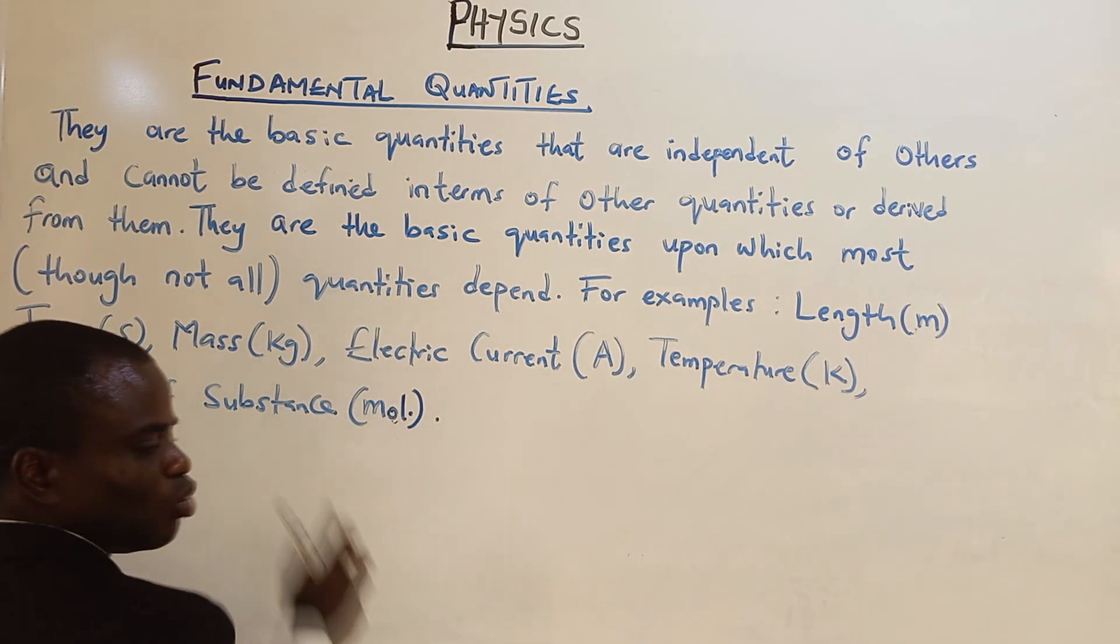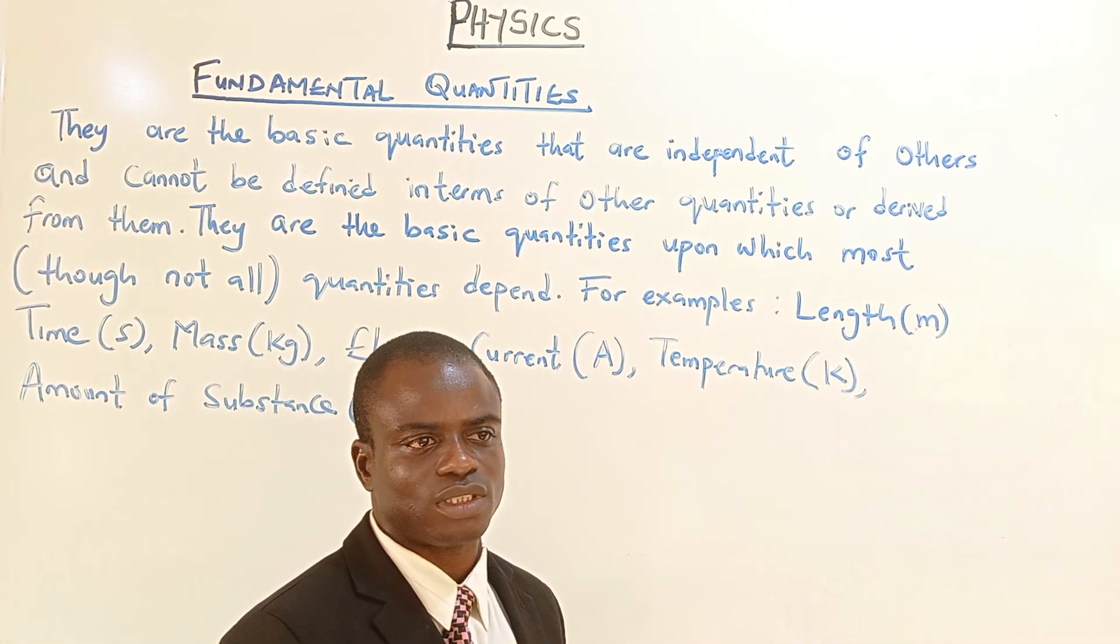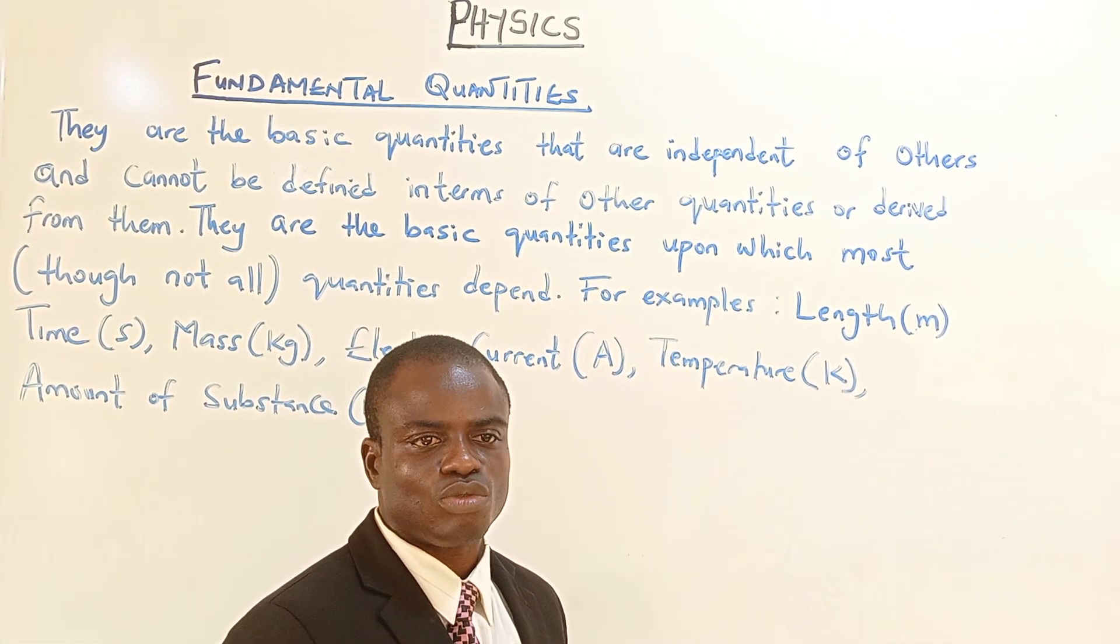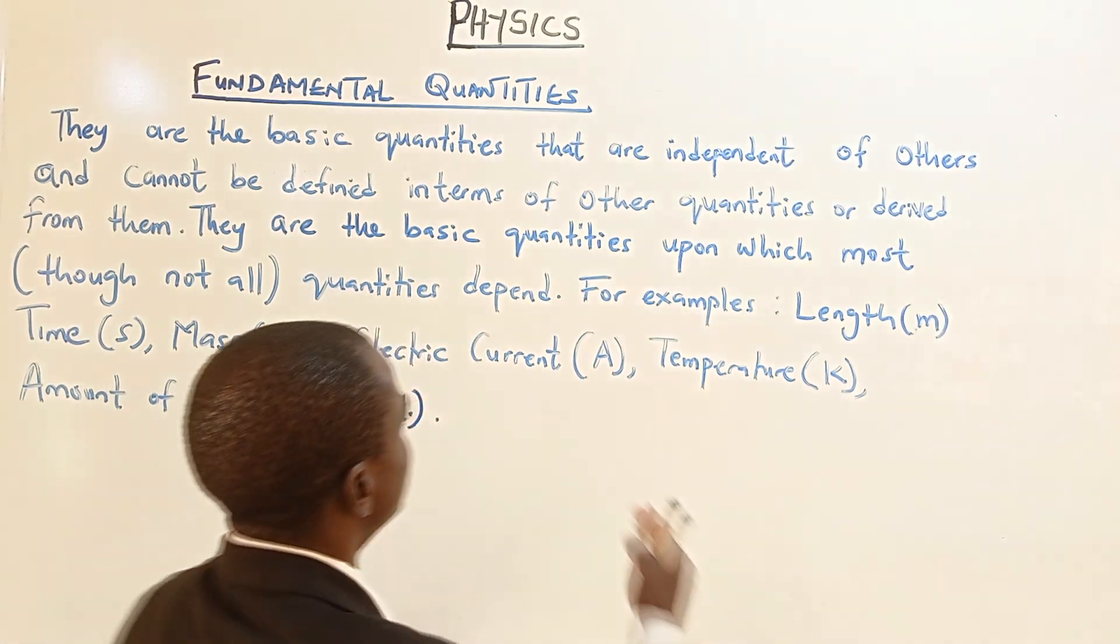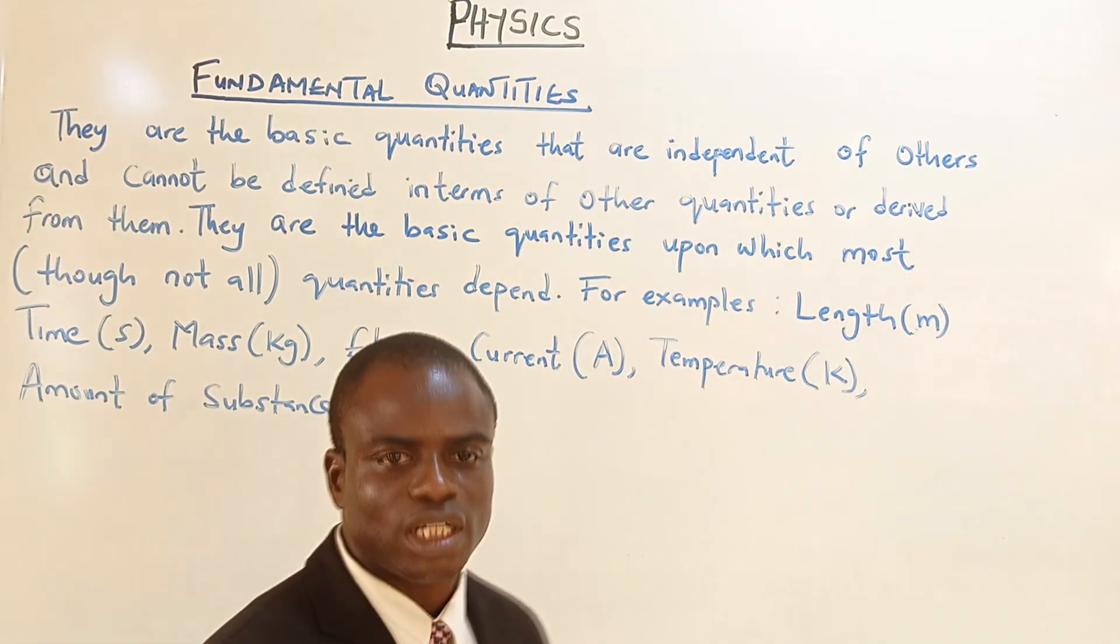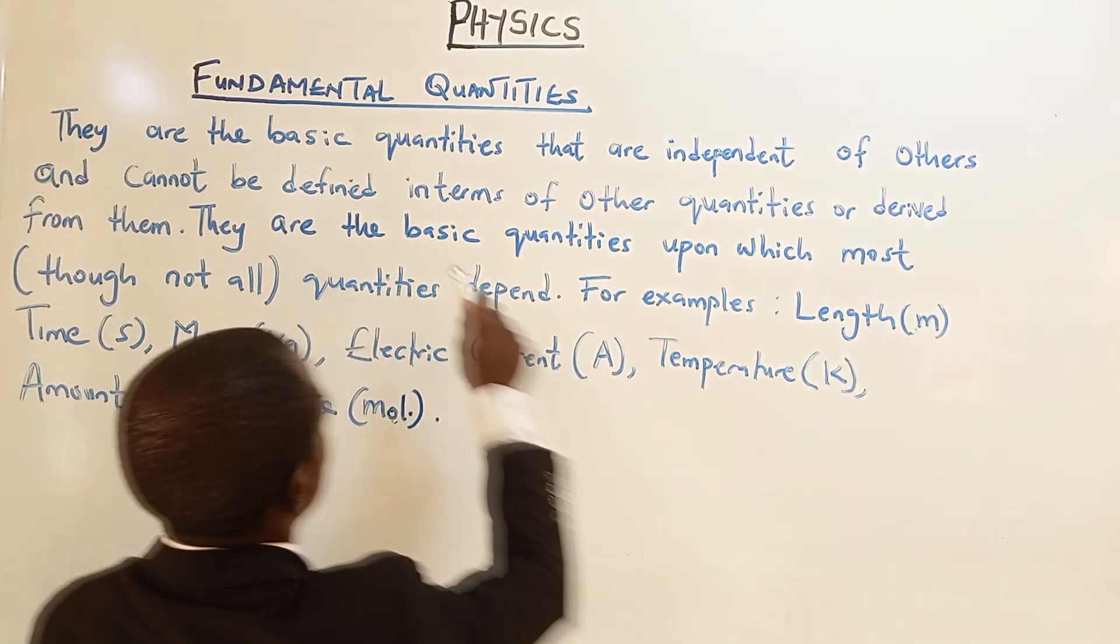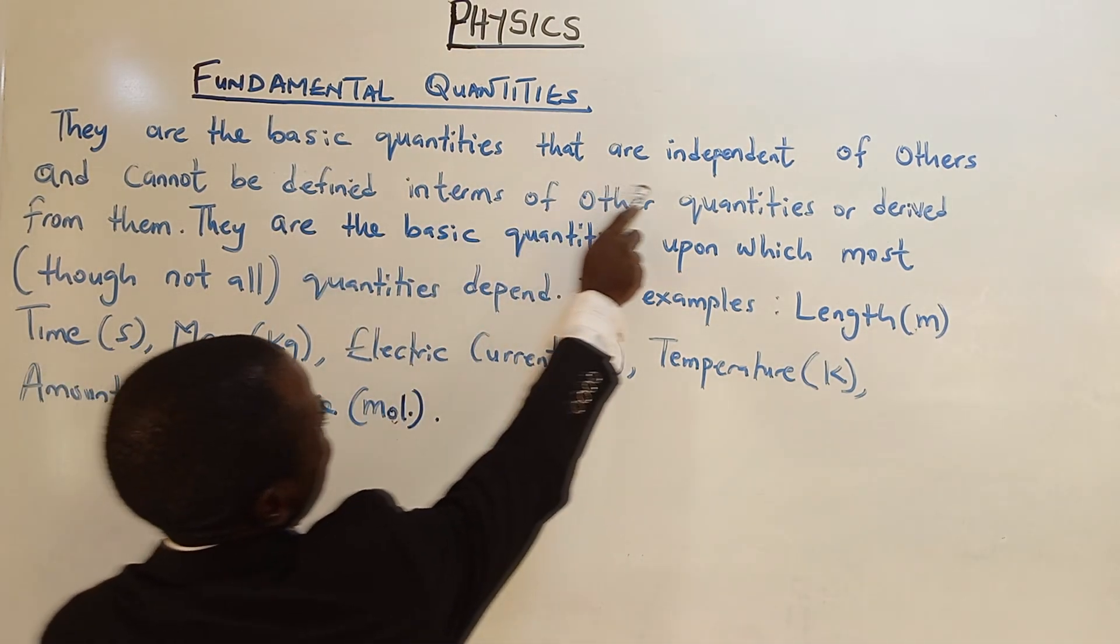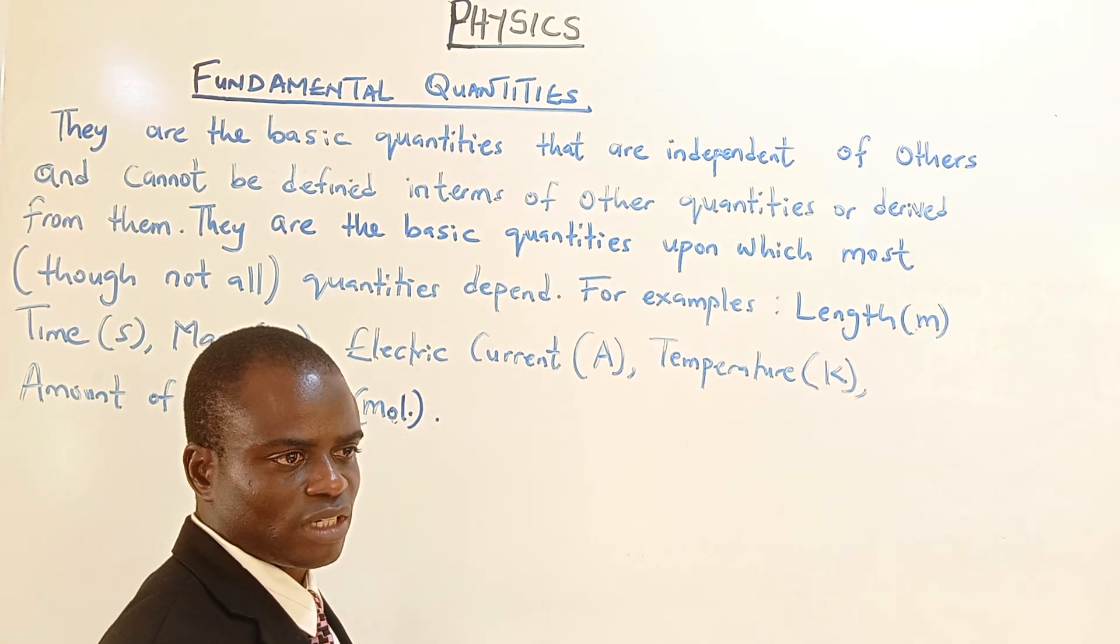These are the quantities which stand on their own. They are independent of other quantities. When we get to derived quantity in the next class, we are going to be combining fundamental quantities together. That's why I said there are basic quantities that are independent. Independent means that they don't depend on any other.